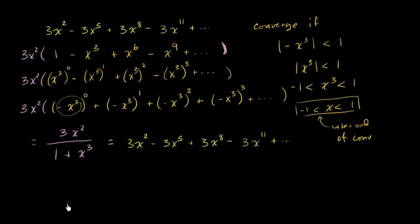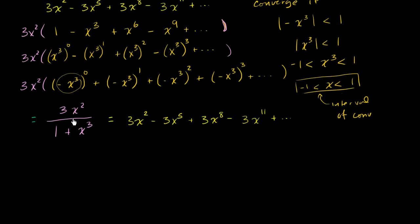Now we can put our calculus hat on, because this looks interesting. This looks like the derivative of something familiar — one plus x to the third. What's the derivative of that? Well, that's 3x². So this right over here is the derivative of the natural log of one plus x to the third. Let's take the antiderivative of both sides of this equation. If we do that, we will have shown a geometric series representation of the antiderivative of this expression. I encourage you to pause the video and try taking the antiderivative of both sides.